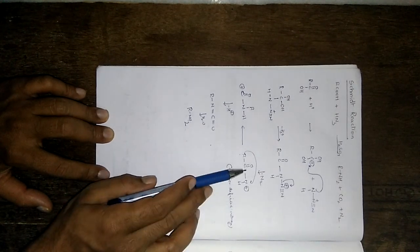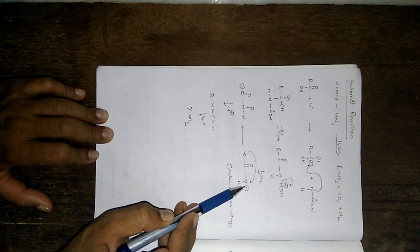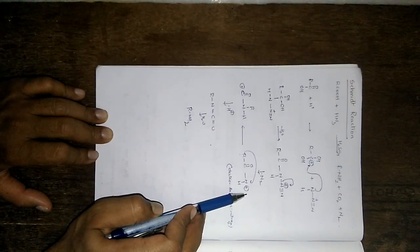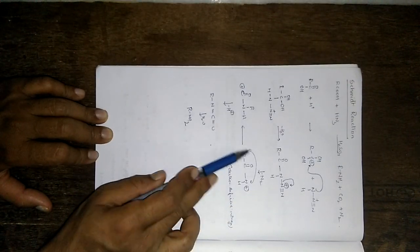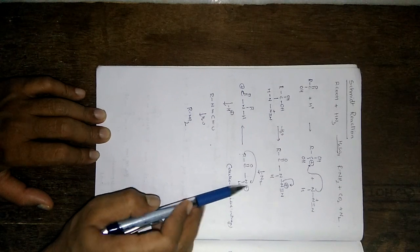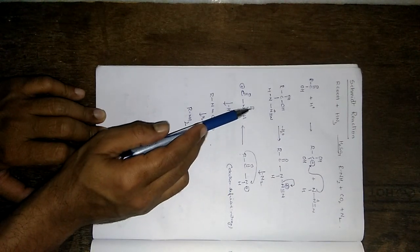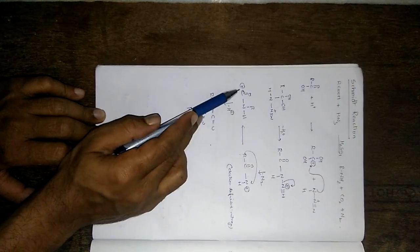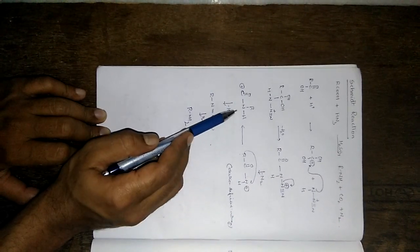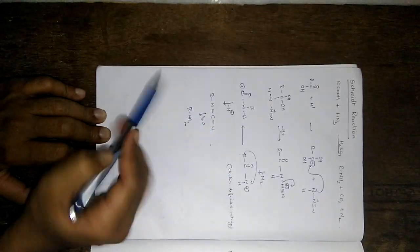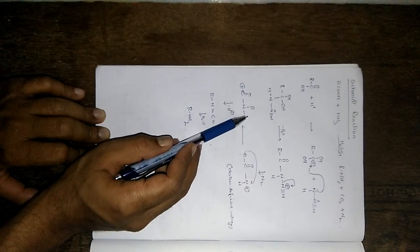Positive charge on nitrogen means electron-deficient nitrogen, which is not stable. Immediately, an alkyl shift takes place — the alkyl group shifts onto the nitrogen atom — resulting in R on the nitrogen atom and a positive charge on the carbon.